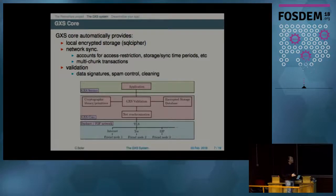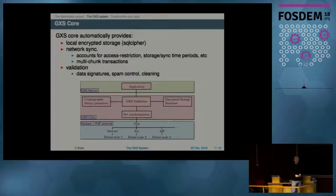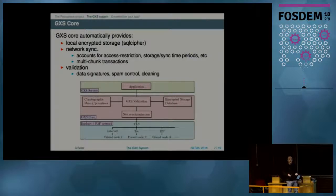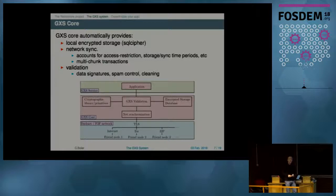At the core of GXS, you have three blocks. First is the encrypted storage, for which we use SQL Cipher. Second is a network synchronization component which accounts for who has the right to see which data — it's based on a multi-chain transaction system. The third block is validation, which checks the signatures of all the data and passes the data onwards once it has been verified.